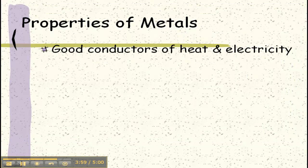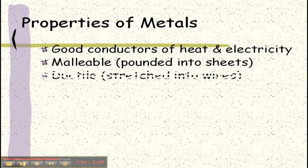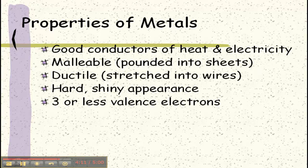Metals are good conductors of heat and electricity. They're malleable, which means they can be pounded into sheets. They're ductile, which means they can be stretched into wires. They have a hard, shiny appearance.